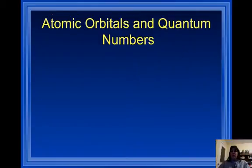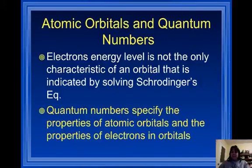So let's talk about these atomic orbitals and quantum numbers. The electrons' energy level is not the only characteristic of an orbital that is indicated by solving Schrodinger's equation. Quantum numbers specify the properties of atomic orbitals and the properties of electrons in orbitals. Now there's four different quantum numbers that we're going to be working with. They're the answers to Schrodinger's equation. The crazy math that's involved in quantum mechanics is beyond the scope of high school chemistry. So we'll be working specifically with the answers to Schrodinger's equation.